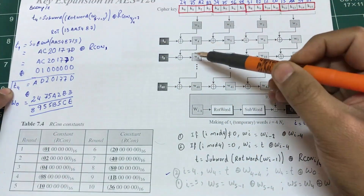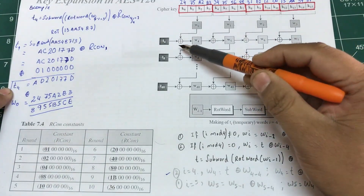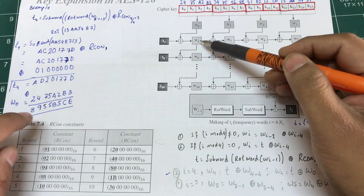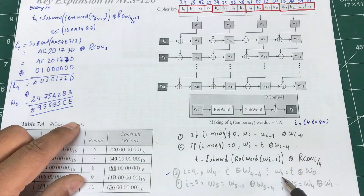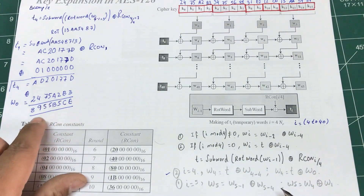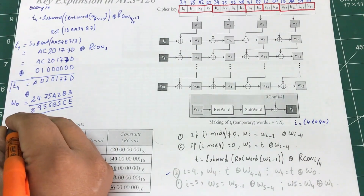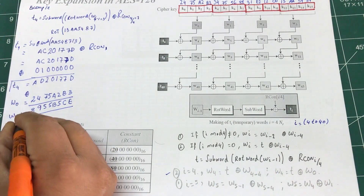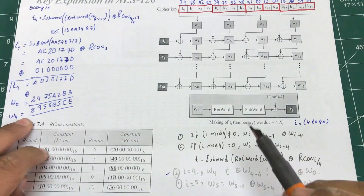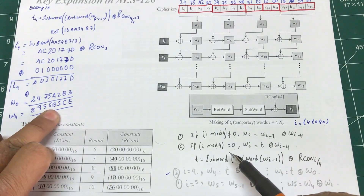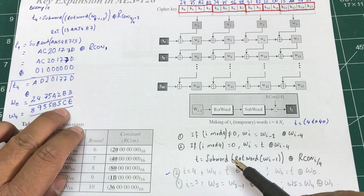So when I XOR T4 with W0, what we computed is W4. W4 is 8955B5CE. This is a hexadecimal number.